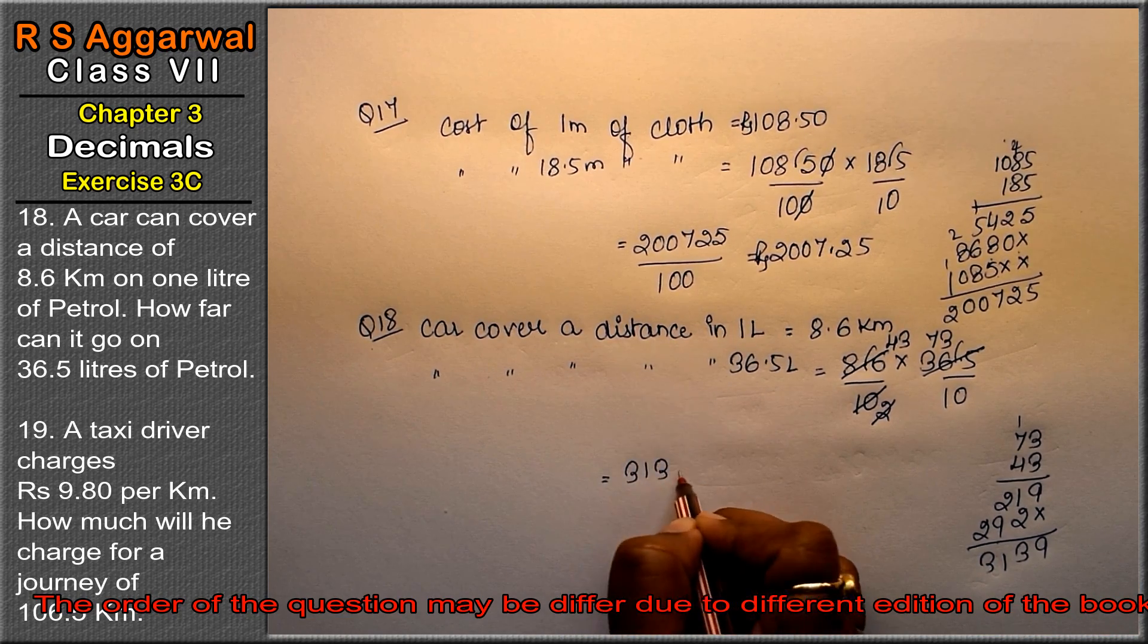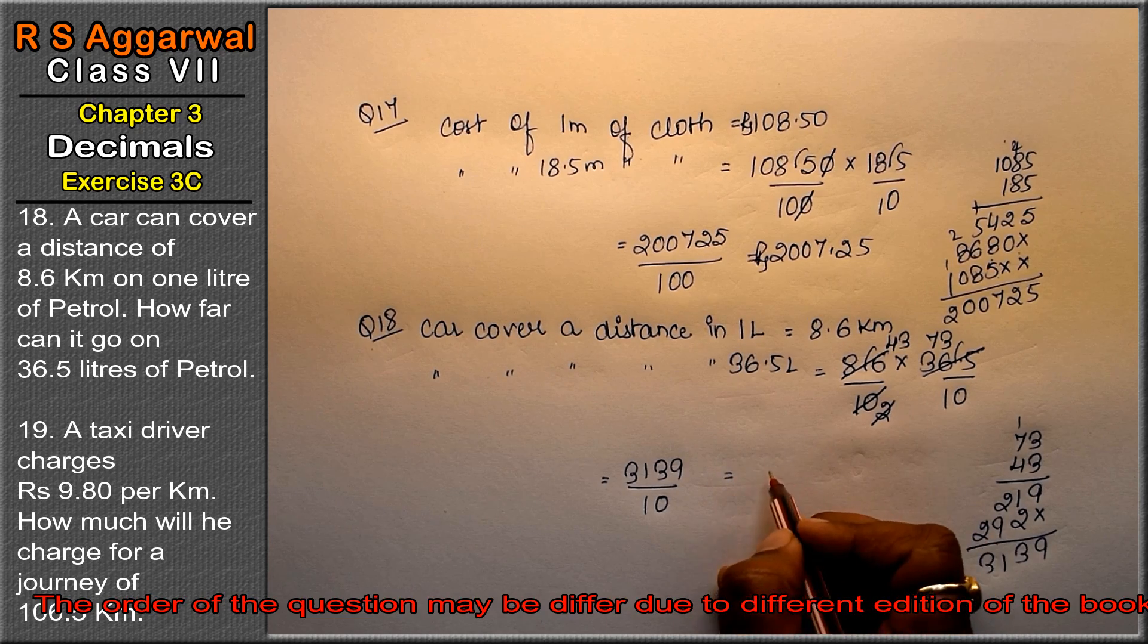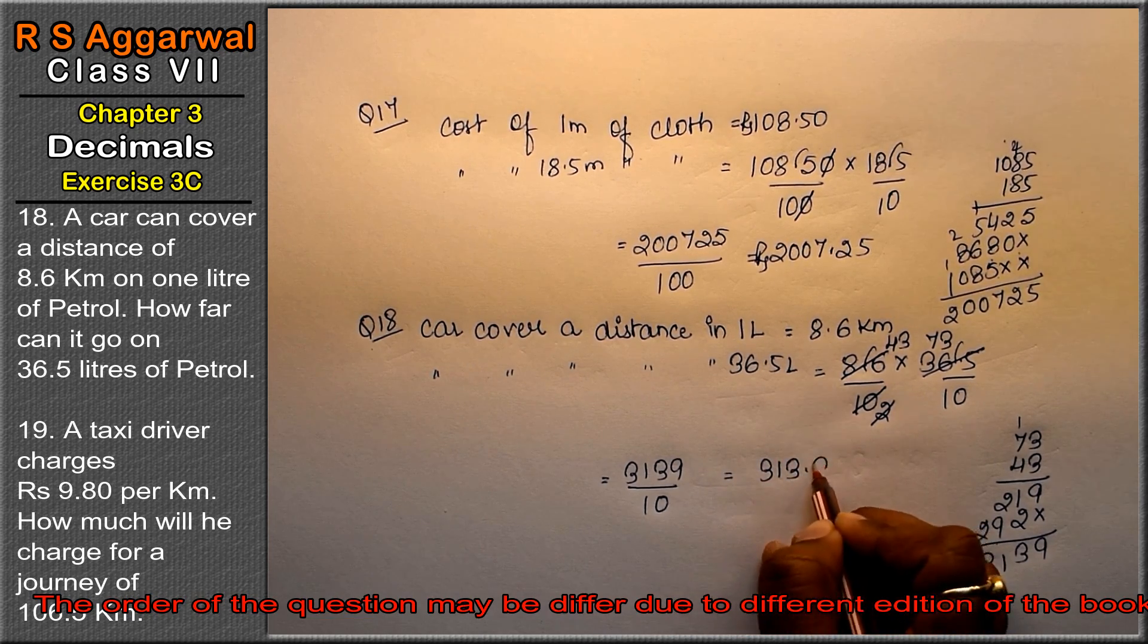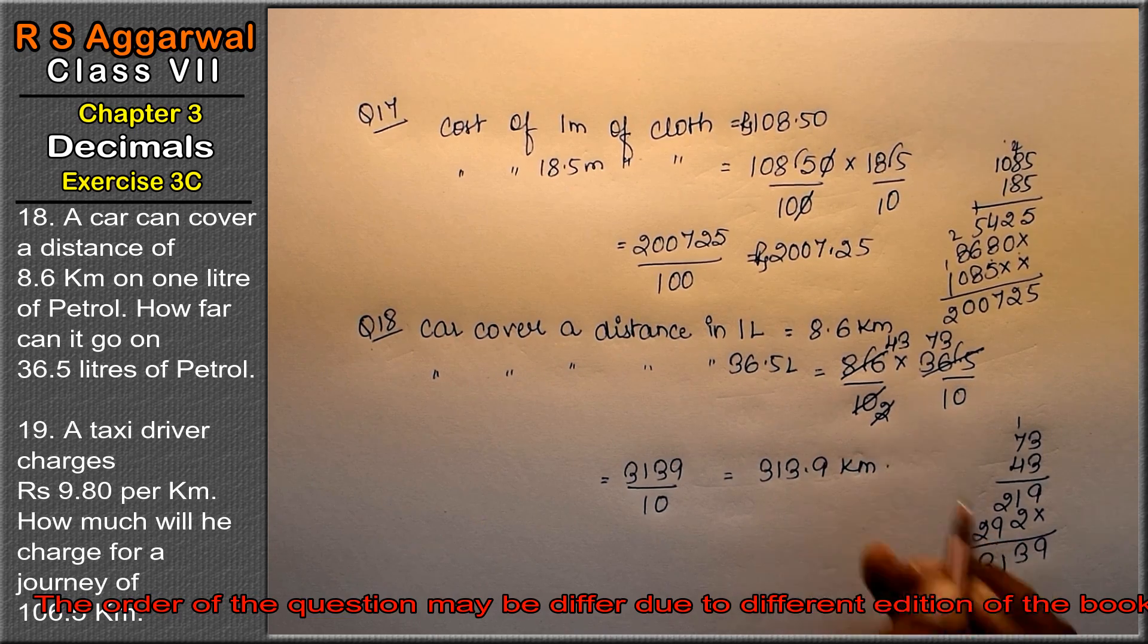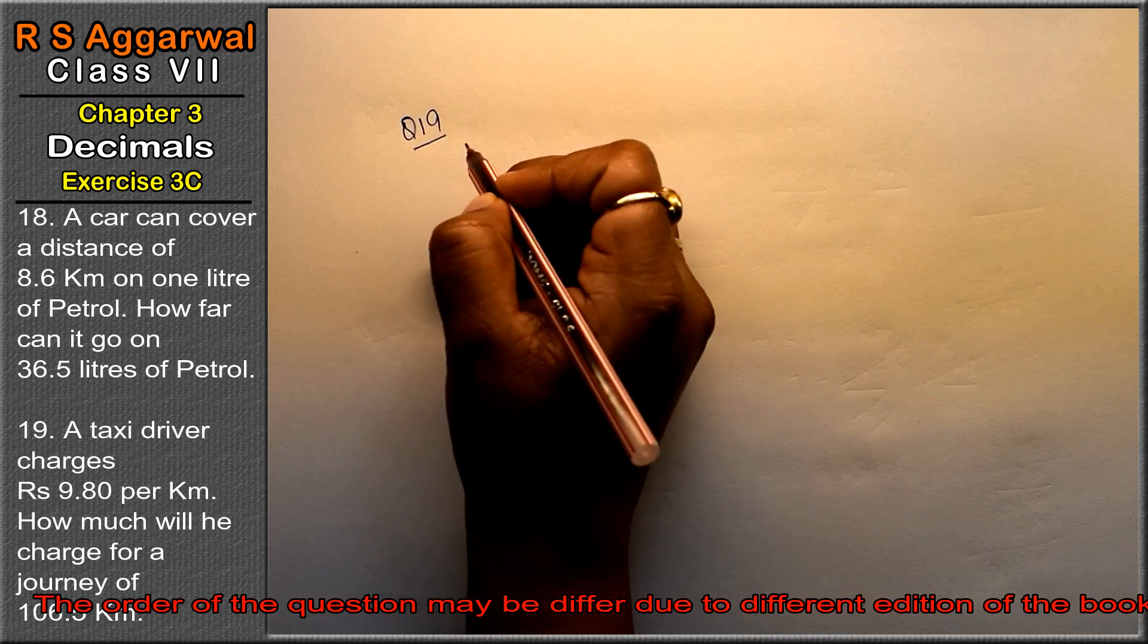So we got 3,139 divided by 10. That means 313.9 km is the answer.